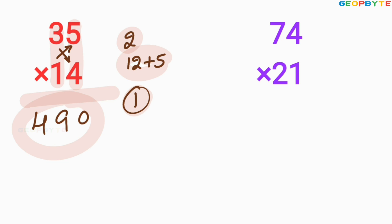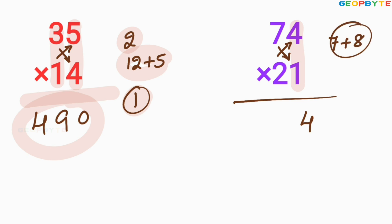Similarly, look at the other number: 74 multiplied by 21. First, multiply 4 and 1: 4 into 1 equals 4. Write that 4 here. Then cross multiplication: 7 into 1 is 7, plus 4 into 2 is 8 — equals 15. Write 5 here, 1 balance. Then multiply 7 and 2: 7 multiplied by 2 is 14, plus 1 balance is 15. Therefore, 1,554 is the value of 74 into 21.